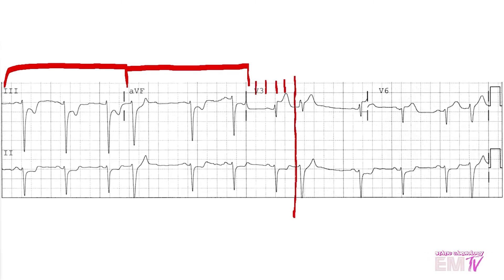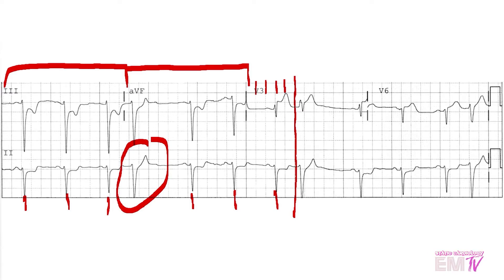Now that I have my 6-second strip, I'll count the R waves and get my rate. Now I left one of the R waves out because I believe that this is a PVC. It's a widened QRS, it tends to break up the R-to-R interval of the preceding normal R waves, and it doesn't have a P wave associated with it. Generally I don't count these toward rate because they tend to be non-perfusing, so I'll say that this rate is approximately 60.